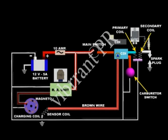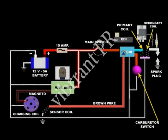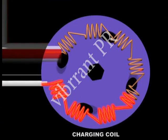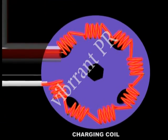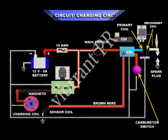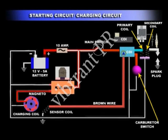Let us now see the electrical flow in a step-by-step manner. As the engine is cranked, electrical energy is produced in the charging coil due to the rotation of the magneto rotor. The current from this charging coil then goes to the rectifier come regulator unit through the white-red wire for rectification and regulation.